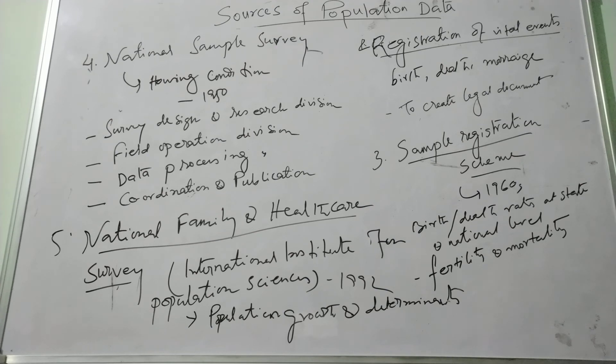Infant and child mortality, child nutrition and health, reproductive health of the population characteristics at the national and state level.